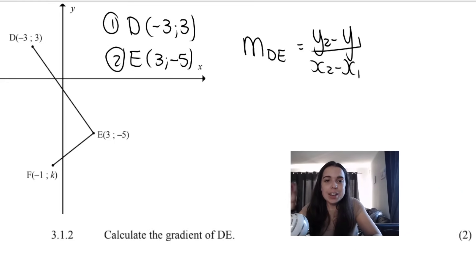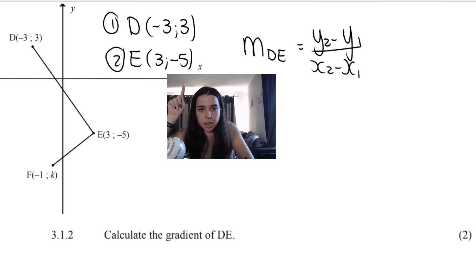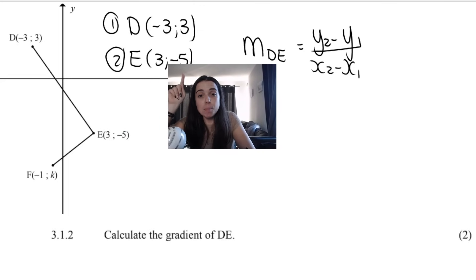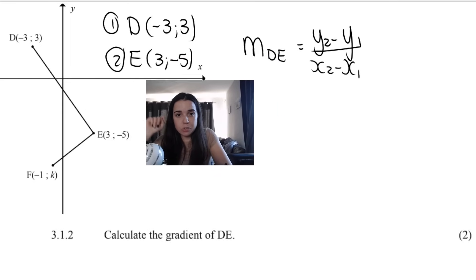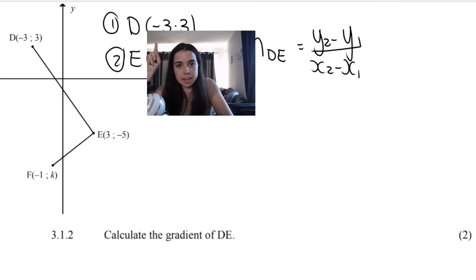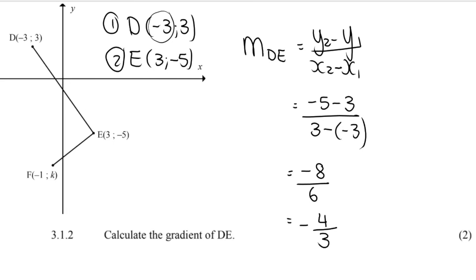Let's rewrite those coordinates. So we take Y2, which is −5, minus Y1, which is 3, over X2, which is 3, minus X1, which is −3. So it's (−5 − 3) over (3 − (−3)). It's very important to note that when X1 is negative, it's minus minus. The gradient works out to negative 4 over 3. You get a mark for substituting into your formula and then for your correct answer.